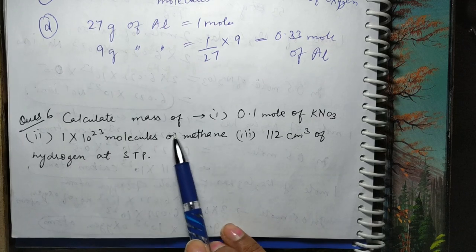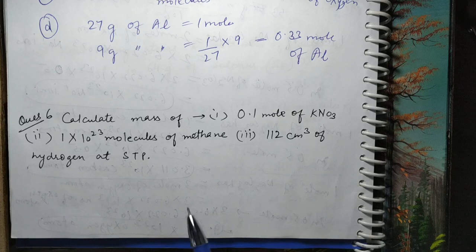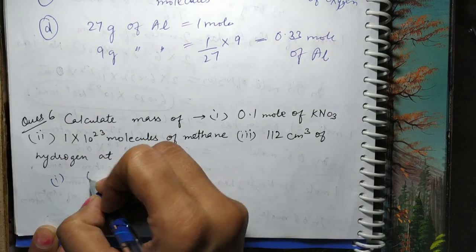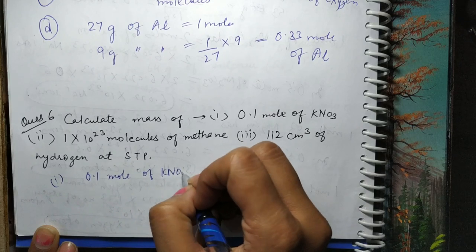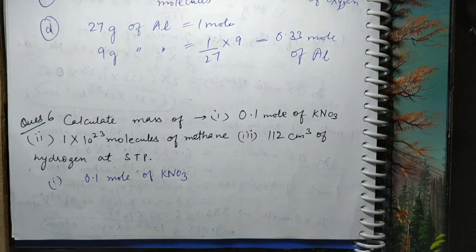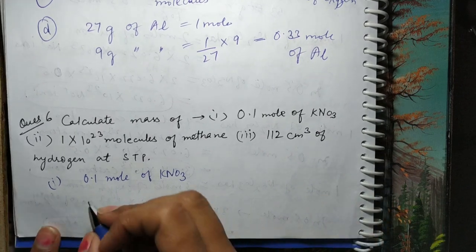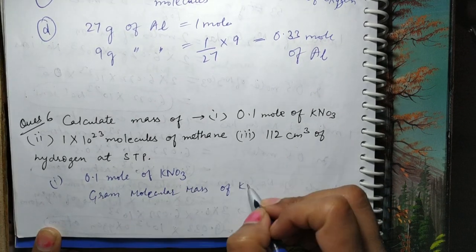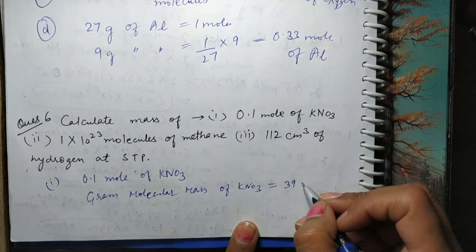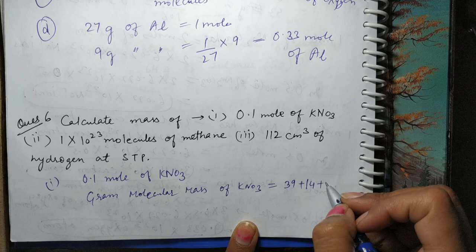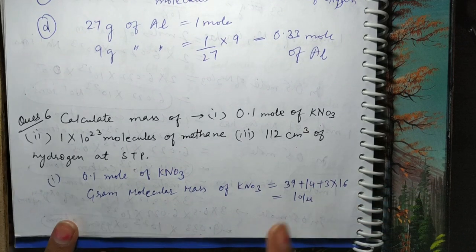The first question is: calculate mass of 0.1 mol of KNO₃. This has 3 parts — let's take the first part: 0.1 mol of KNO₃. Aapko pata hai, kisi bhi cheez ka 1 mol uske gram molecular mass ke barabar hai. Yeh molecule hai, to aap iska molecular mass calculate karoge — gram molecular mass of KNO₃. Potassium = 39, plus 14, plus 3×16 = 101. To 1 mol of KNO₃ is equal to 101 gram.